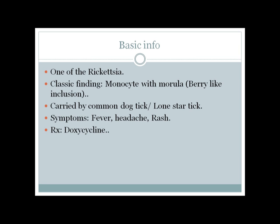I actually took NBME 12 about six hours earlier and got a question on Ehrlichiosis — specifically, which drug to use and the mechanism of that drug. The answer was doxycycline. Doxycycline is a tetracycline analog in the tetracycline group, and it inhibits the 30S ribosomal subunit.